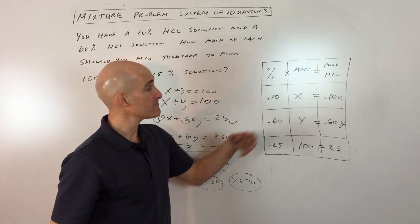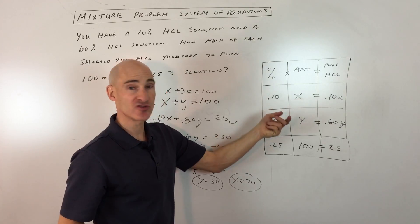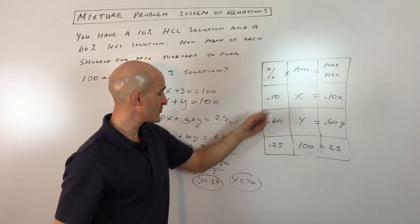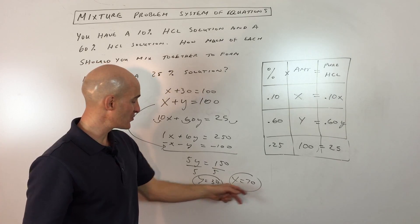So basically the chart kind of helps you to organize your data. And then when you go to solve for your variables, you know what you solved for. You said, okay, X is my 10% solution. I need 70 milliliters of the 10% solution.